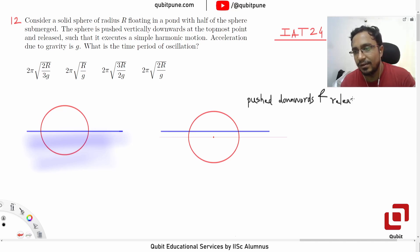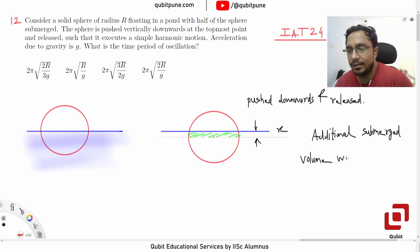Let's say we push it so that its center shifts by an amount x like this. Now first of all, why would it start executing simple harmonic motion? The buoyant force is going to act as a restoring force because there is an additional volume submerged.